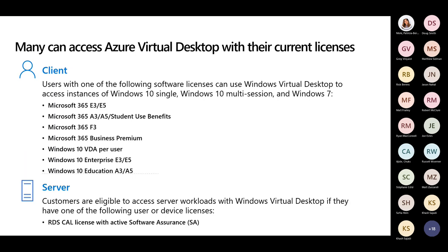With any AVD deployment there are two cost components: Azure compute cost, which includes your storage and the VM node you're choosing, and licensing cost. Many customers we speak with have already adopted Microsoft 365 — using maybe E3, E5, or Business Premium licensing — and Windows 10 multi-session under the client category already comes with that. So if you're not using Azure Virtual Desktop benefits, you're leaving licensing value on the table. You can deploy with Windows 10 multi-session, which requires the licenses listed, or with a server operating system, which requires RDS-CAL licensing with Software Assurance.